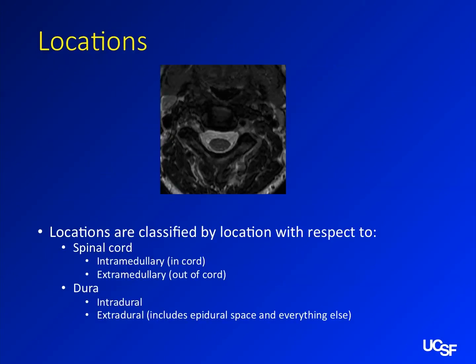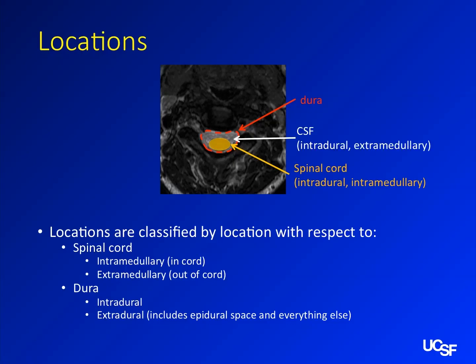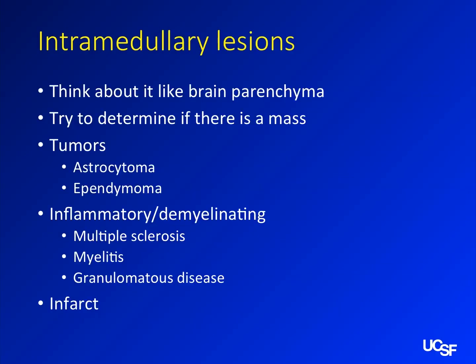There are three spaces you can be in. You can be in the cord — that's intramedullary. The cord is inside the dura, so that's intradural. Things are classified by whether they are in the dura or outside the dura, and whether they are in the cord or outside the cord. The cord itself is intramedullary. Then you have the dura, and the space contained by the dura is intradural extramedullary. Everything else is extradural, which includes the epidural space and everything else.